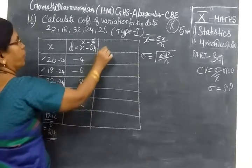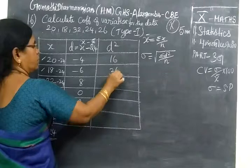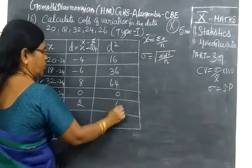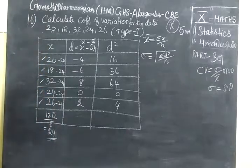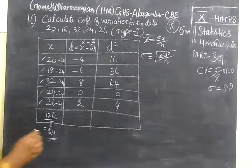And you can find d square. So, 16, 36, 8 as a, 64, 0, 4. Now we set the answer for this. 16, 26, 54, 0, 4. So if you add you are getting 120.